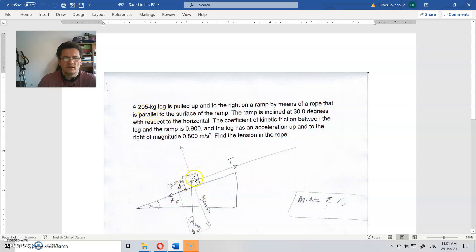A 205 kilogram log is pulled up and to the right on a ramp by means of a rope that is parallel to the surface of the ramp. The ramp is inclined at 30 degrees with respect to the horizontal. The coefficient of kinetic friction between the log and the ramp is 0.9.